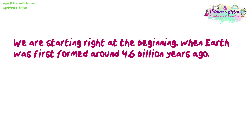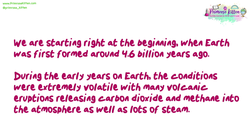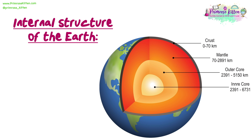We are starting right at the beginning, when earth was formed around 4.6 billion years ago. During the early years on earth, the conditions were extremely volatile, with many volcanic eruptions releasing carbon dioxide and methane into the atmosphere, as well as lots of steam. To understand some of the content delivered in this lesson, it is important that you know the internal structure of the earth.